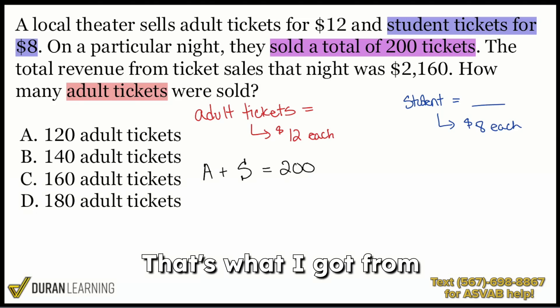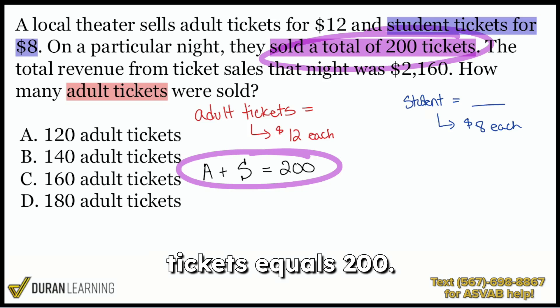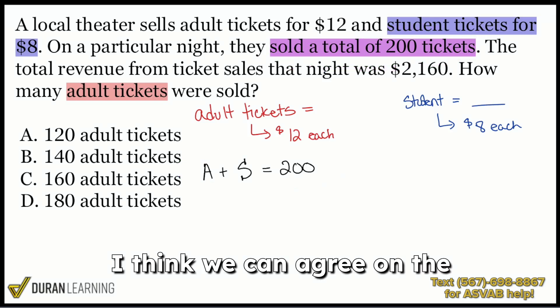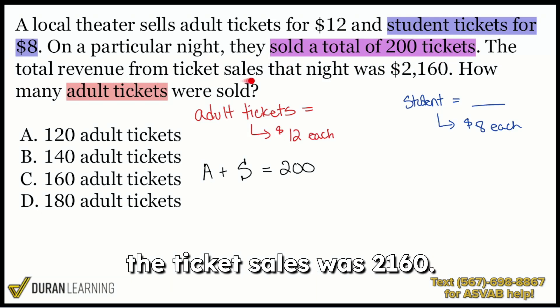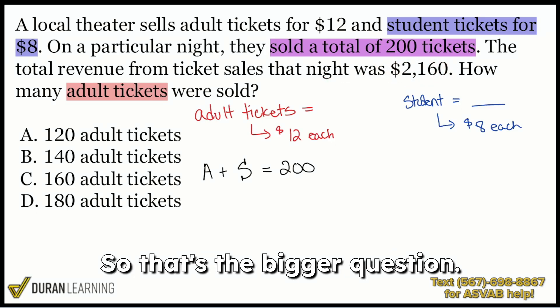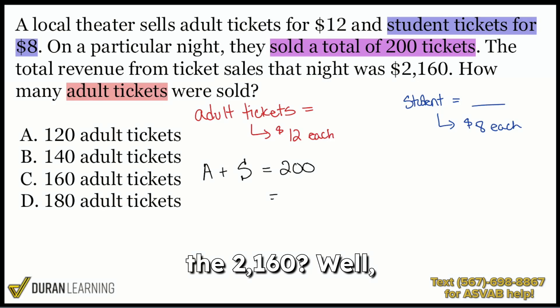That's what I got from this right over here. That's what that told me. So that's that representation. Again, adult tickets plus student tickets equals 200. I think we can agree on the logic there. Now, up next, it says the total revenue from the ticket sales was 2,160. So that's the bigger question. How are we supposed to represent the 2,160?